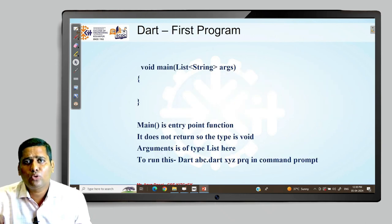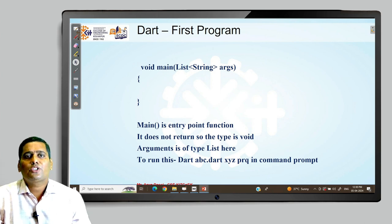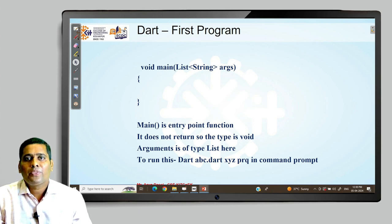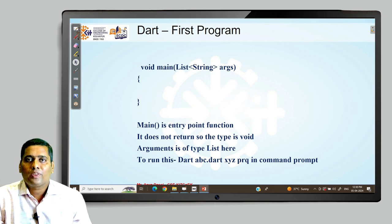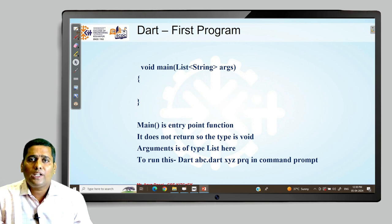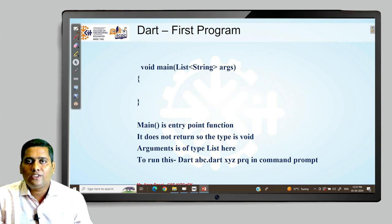Looking at the first program, we have the entry point function called main. The main function does not return anything, so we write its type as void. It has arguments of type list, and we can send string type arguments as a list from main. You can run Dart using Android Studio as a recommended IDE, or use the online editor DartPad to type and execute programs.